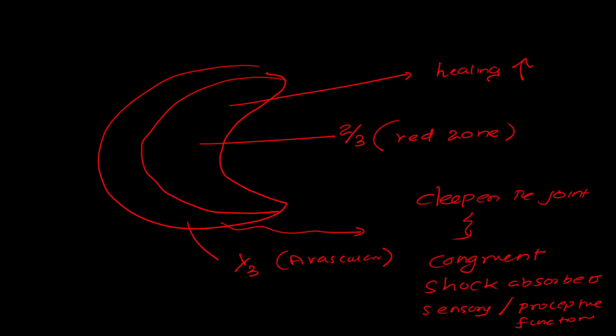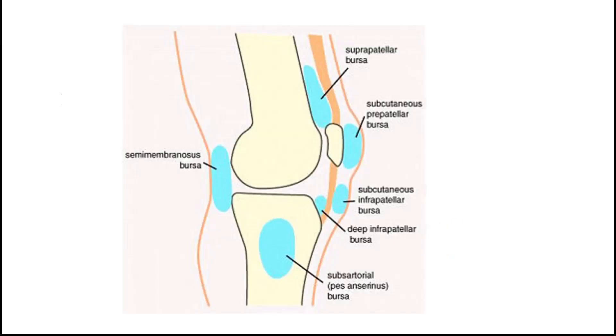The anterior cruciate ligament injury is also very common, usually occurring in violent hyperextension of the knee. The posterior cruciate ligament could be injured by dislocation of the tibia. Both anterior and posterior cruciate ligament tears are seen in sports injuries encountered in clinical practice.